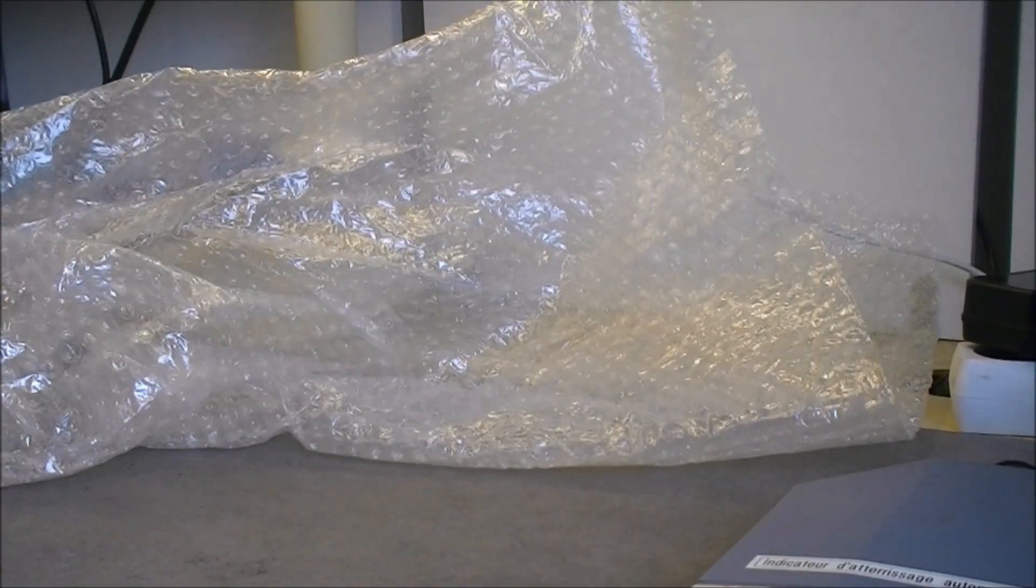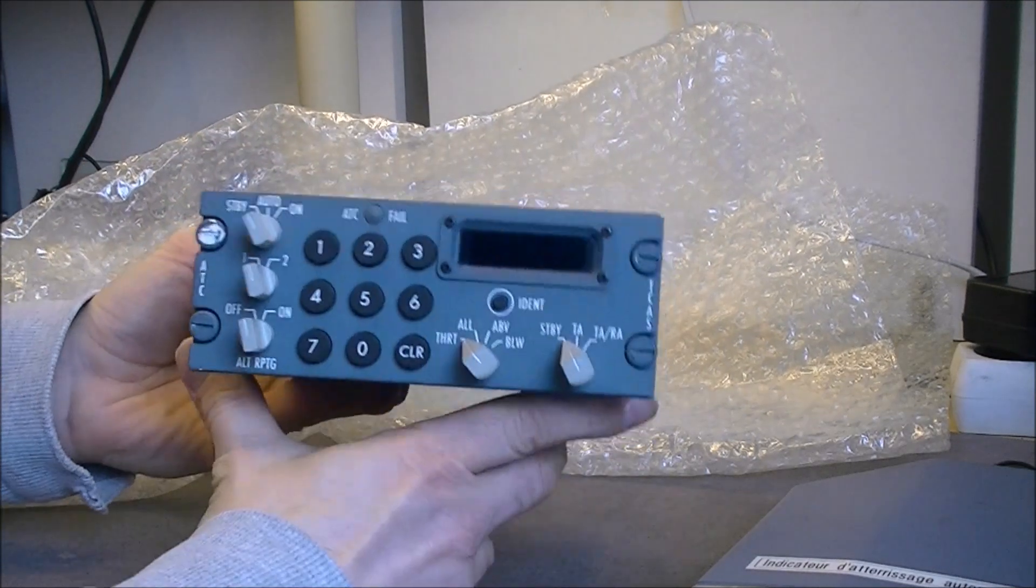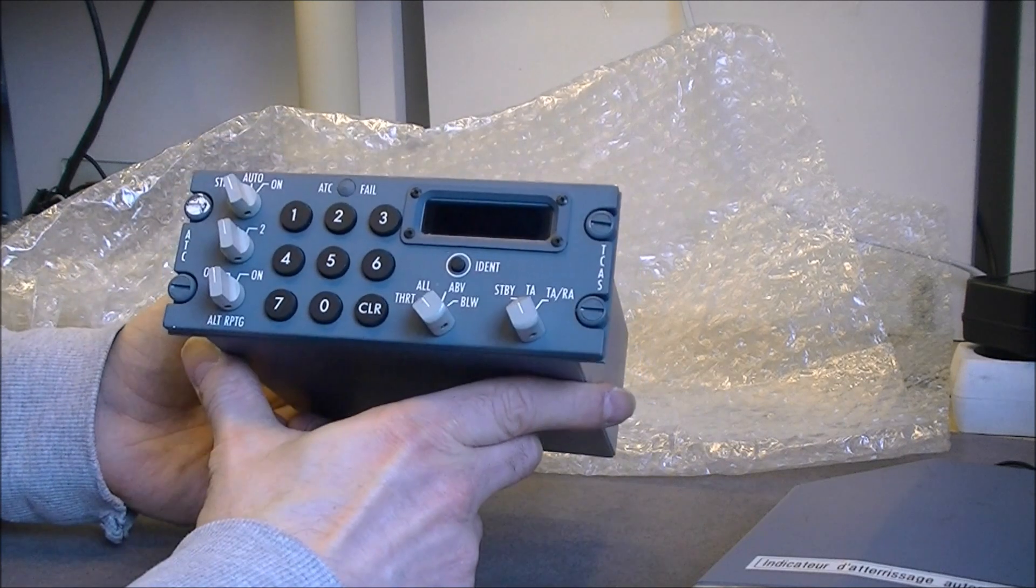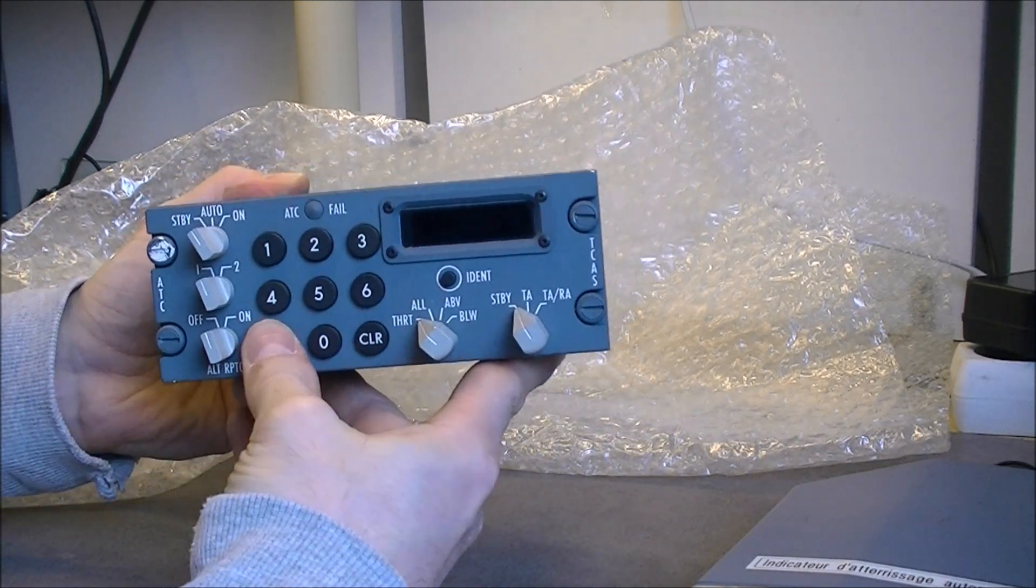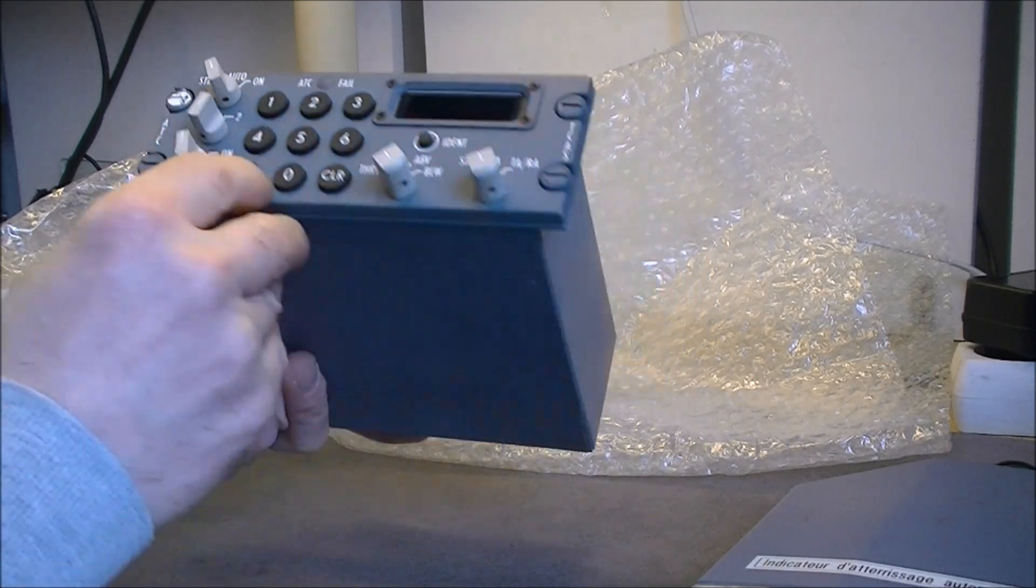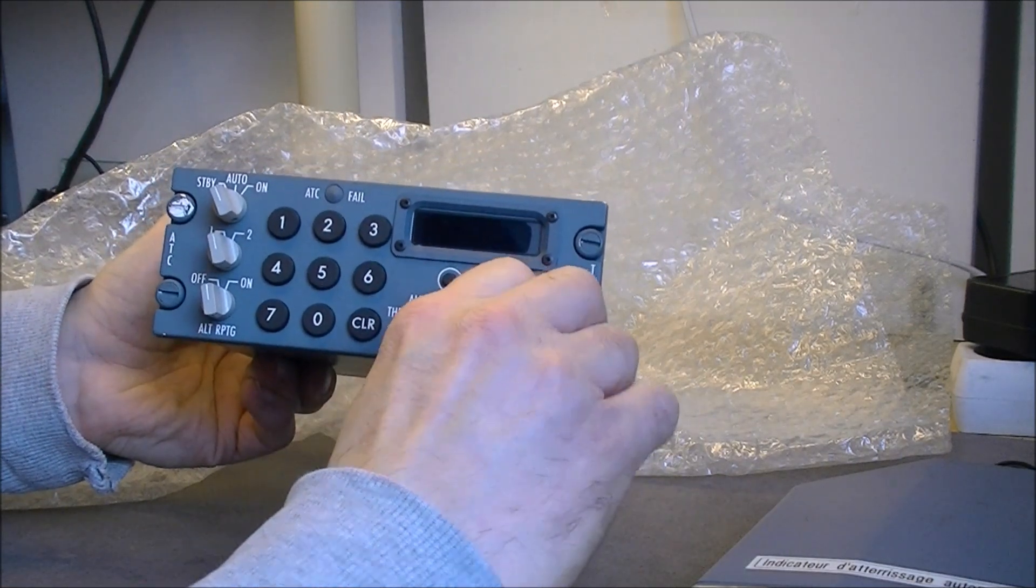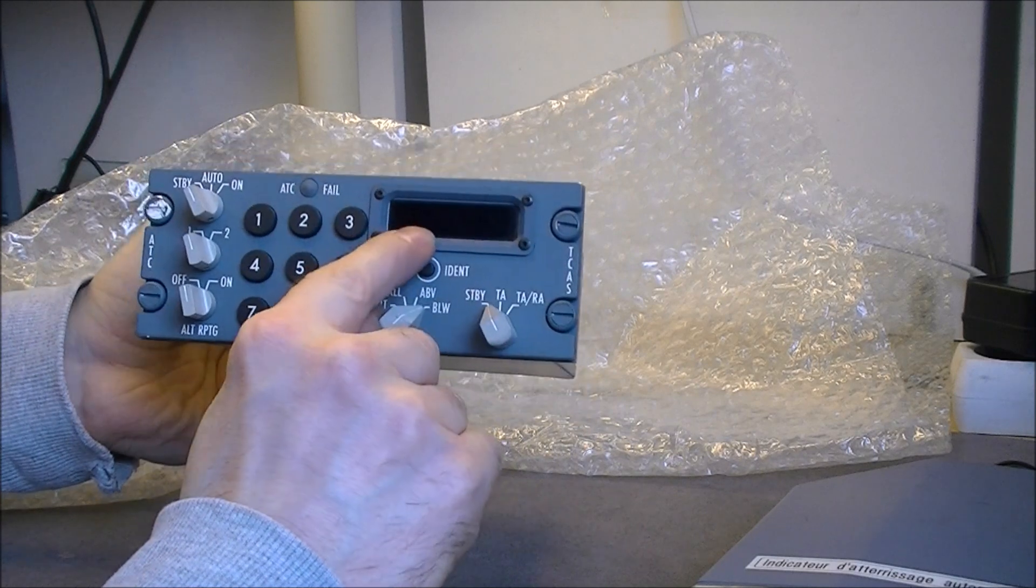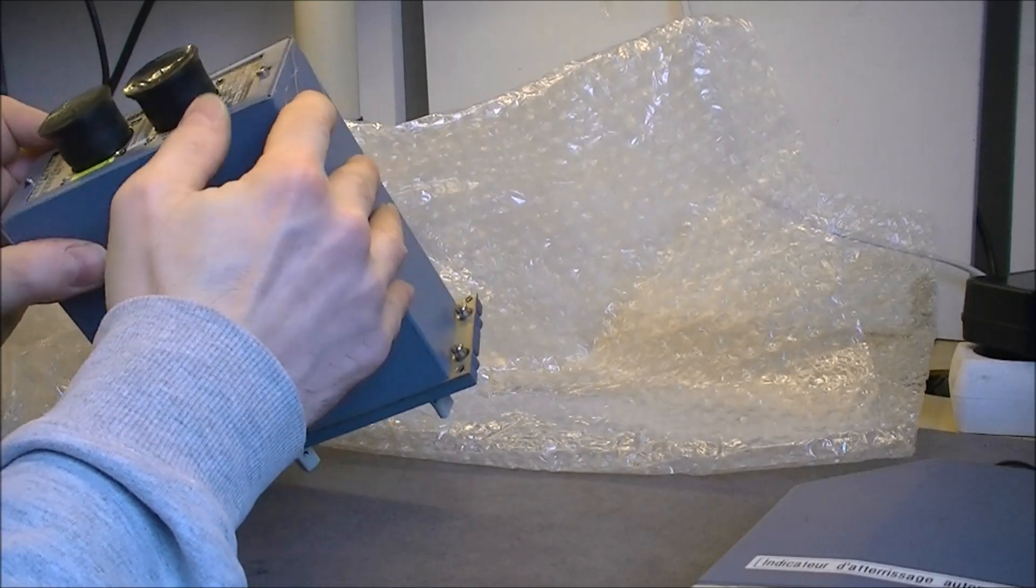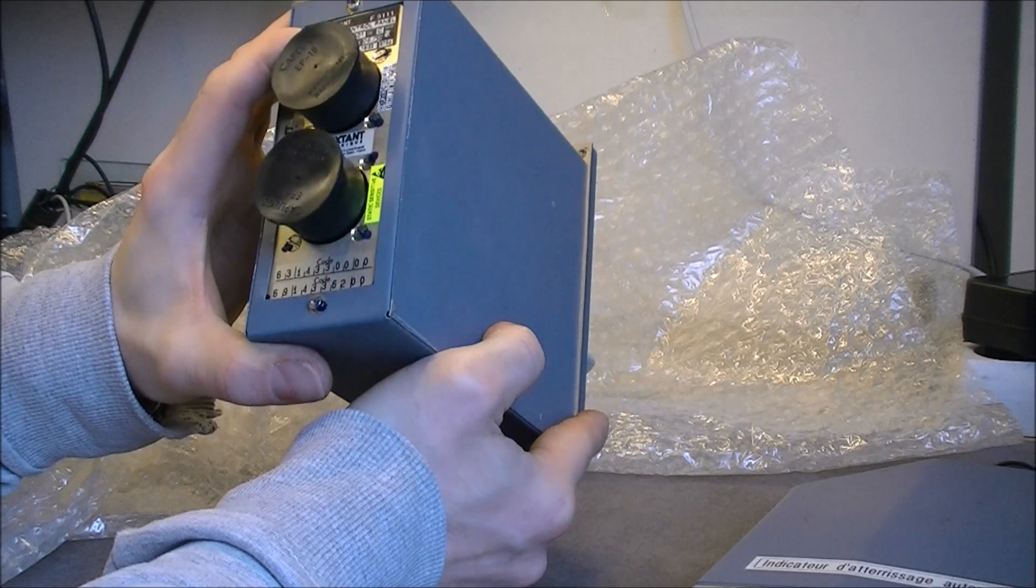The second item is a TCAS collision avoidance system. And as you can see, it is in a really nice condition. The buttons look like new. Really, really beautiful thing. A little, what seems to be an LCD display on this. One made by Sextant Avionique.